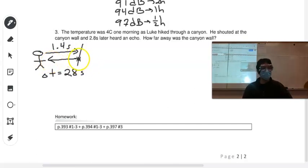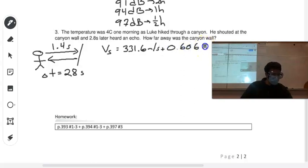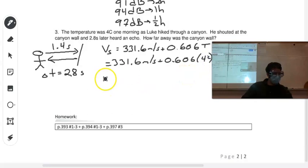So if we want to know how far away it is, we need to know how fast sound was traveling. So we do our equation. The speed of sound is 331.6 meters per second plus 0.606 times the temperature. Now the temperature is 4, so 4 degrees Celsius. So plus 0.606 times 4 degrees Celsius. And if you plug that into your calculators, you'll get about 334 meters per second.